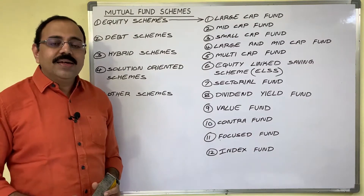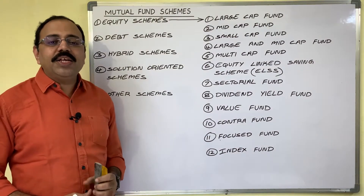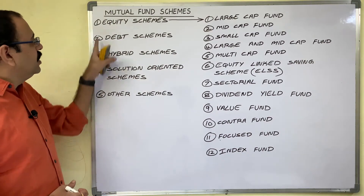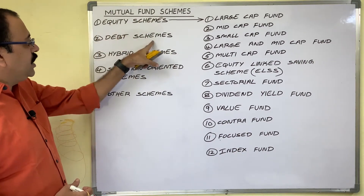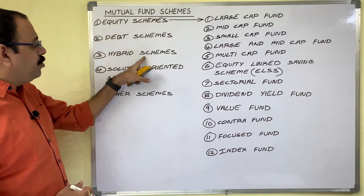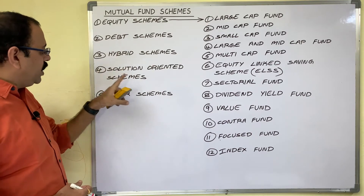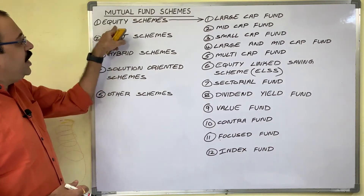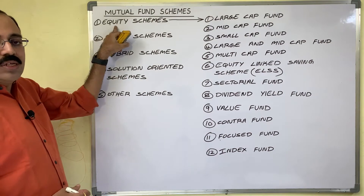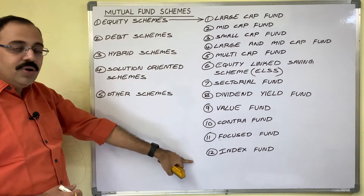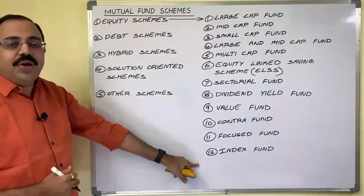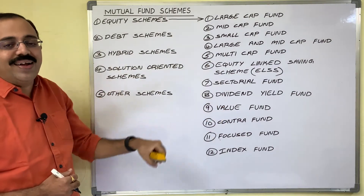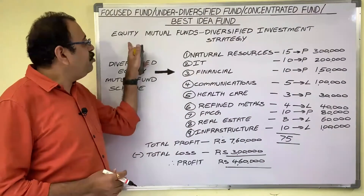SEBI has categorized mutual funds into five types: equity schemes, debt schemes, hybrid schemes, solution-oriented schemes, and other schemes. Equity schemes are further classified into 12 types. The present video is about the 11th one — focused fund.